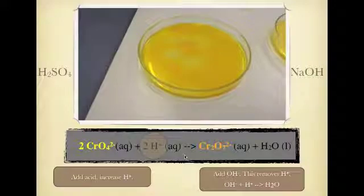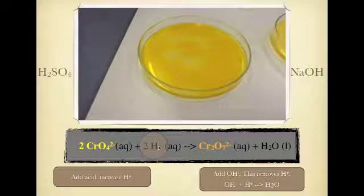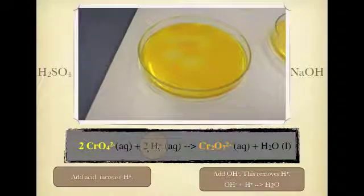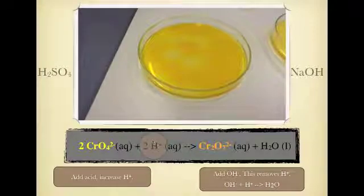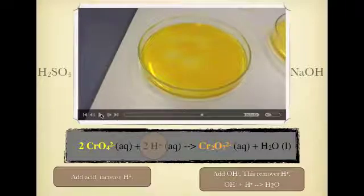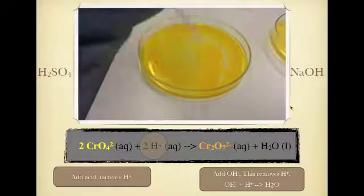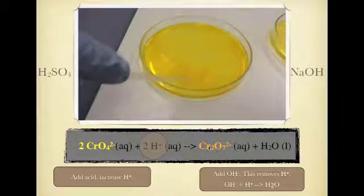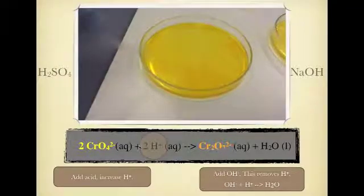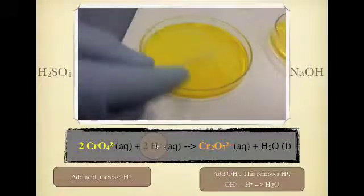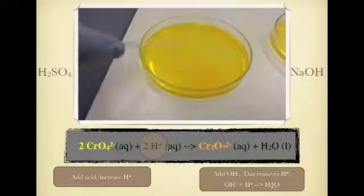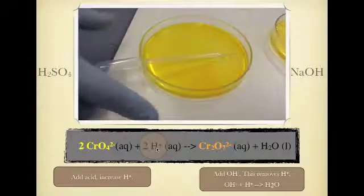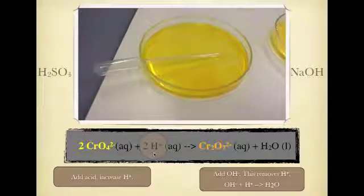Le Chatelier says the equation is going to do everything in its power to oppose whatever change we're making in this case, removing this, so therefore we're going to have a back reaction to replenish the amount of hydrogen that we've actually lost. So the addition of the sodium hydroxide is making that orange color fade, and we get a net back reaction happening because the removal of this makes the back reaction happen because Le Chatelier said that it will try and replenish the stocks. And that's that one.